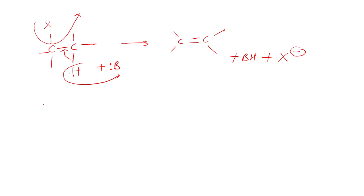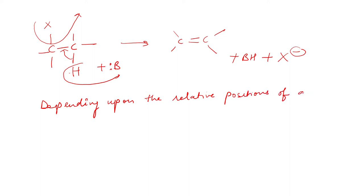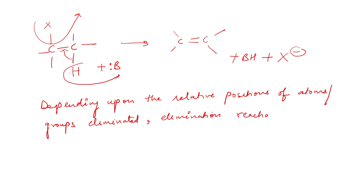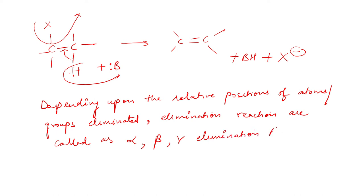Depending upon the relative positions of atoms and which groups are being eliminated, these elimination reactions are also called alpha, beta, or gamma elimination reactions. Now let me quickly explain what happens in alpha, beta, and gamma elimination.